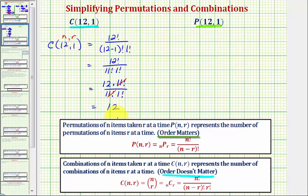Which again, should make sense. If we have 12 items and we're taking one at a time, we can make a total of 12 combinations.